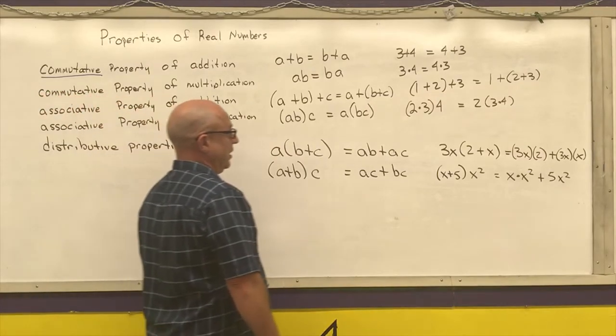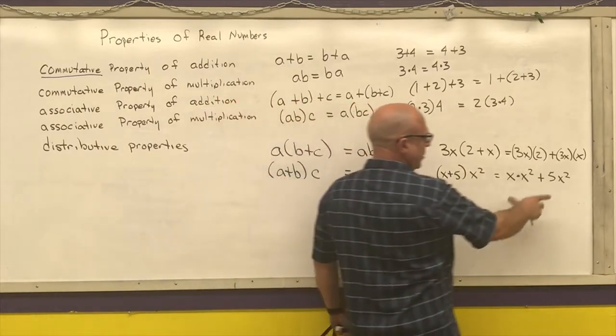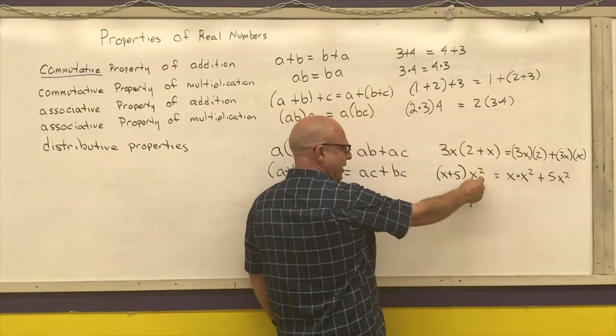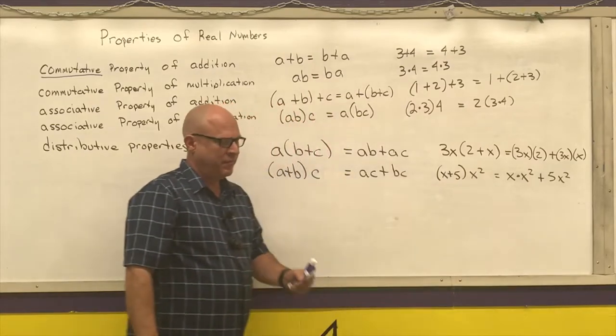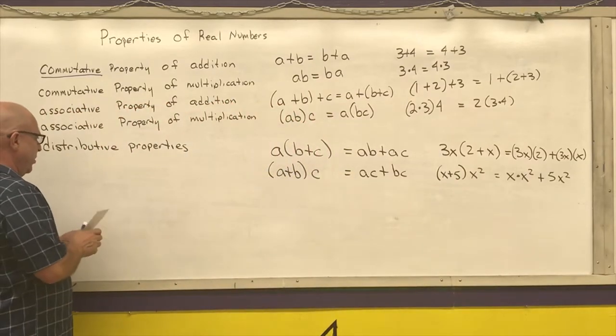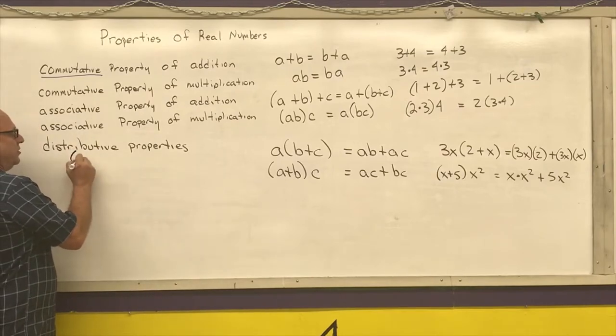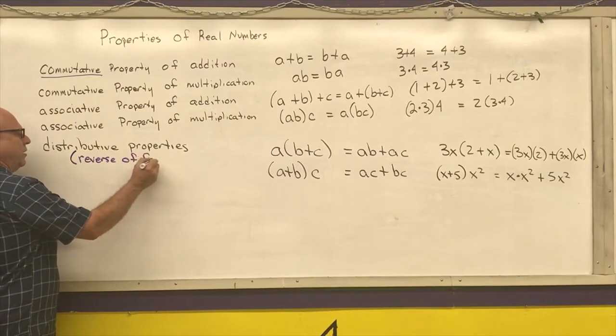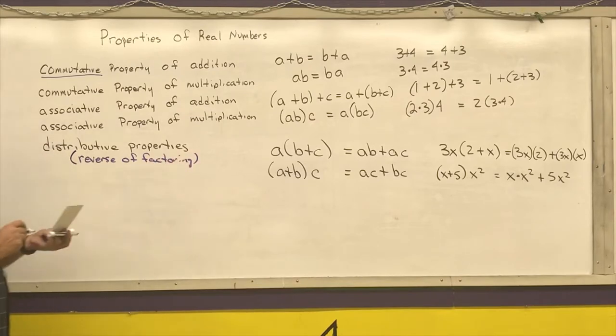One thing to note is that the distributive property works both directions. So if you have something that looks like x cubed plus 5x squared, you can pull out that x squared and return back to the original problem. That's called factoring. Distributive is the reverse of factoring, which you did with integers previously.